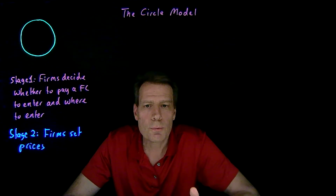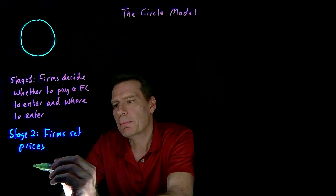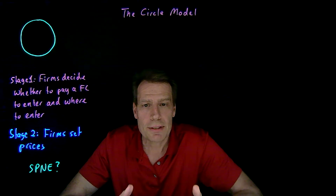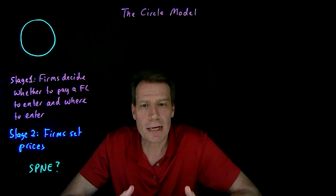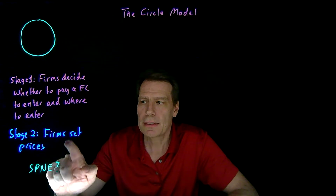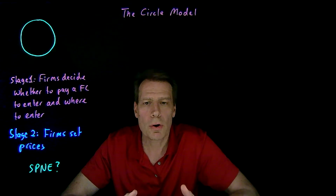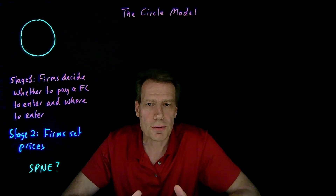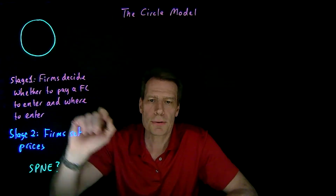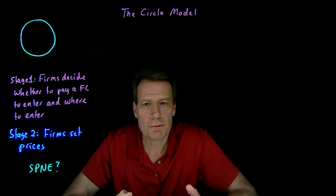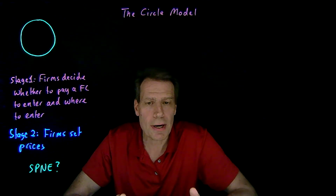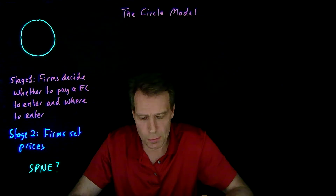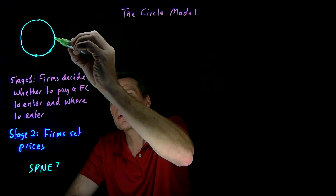What we'll do is think about what is the subgame perfect Nash equilibrium in this game. We start at the bottom of the game tree — in stage two, which is a simultaneous move game where all firms set their prices. It's reasonable to assume that whatever number of firms entered the circle in stage one, they will have equally spaced themselves around it, because they will maximally differentiate their products to be as far from competitors as possible in order to increase their market power.